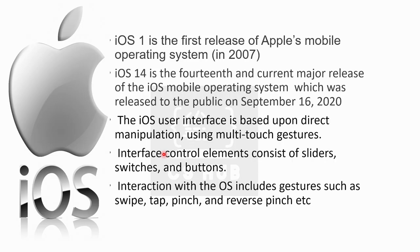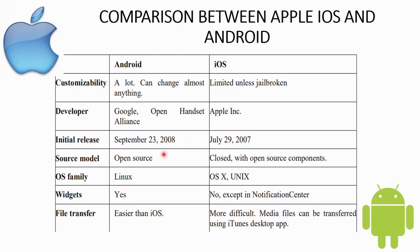Now for the comparison between Apple iOS and Android. The first point is customizability. The Android operating system can be customized a lot — you can change almost everything. But iOS, being proprietary software, is limited unless jailbroken. Jailbreaking gives access to the root level, but Apple has a lot of restrictions for normal users.